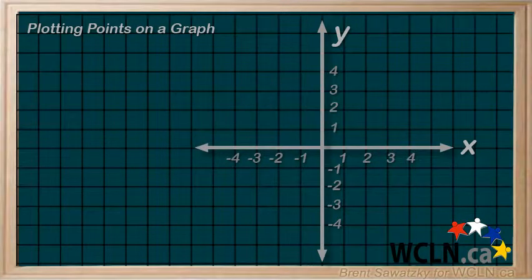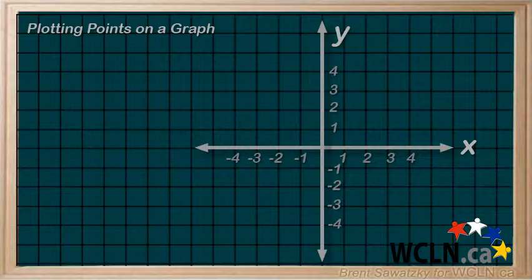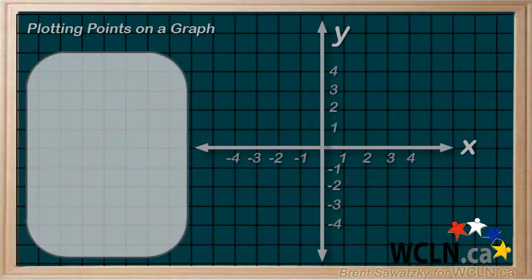Once we have our coordinate plane all set up, the next step in the making of a graph involves plotting our points. Now our points may come from equations or tables, but for now let's just make sure we know how to determine where to put each point on a graph.